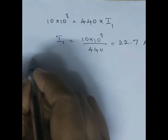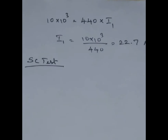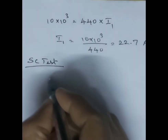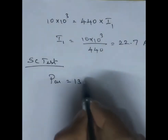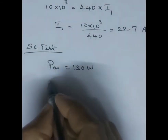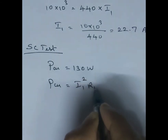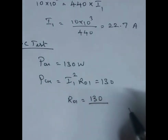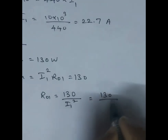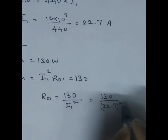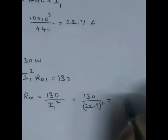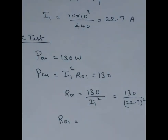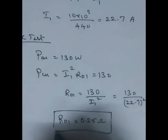From the SC test, we can find R₀₁ and X₀₁. The wattmeter reading from the SC test is 130 W, which equals copper loss. Copper loss = I₁² × R₀₁ = 130 W. Therefore R₀₁ = 130 / (22.7)² = 0.25 Ω.